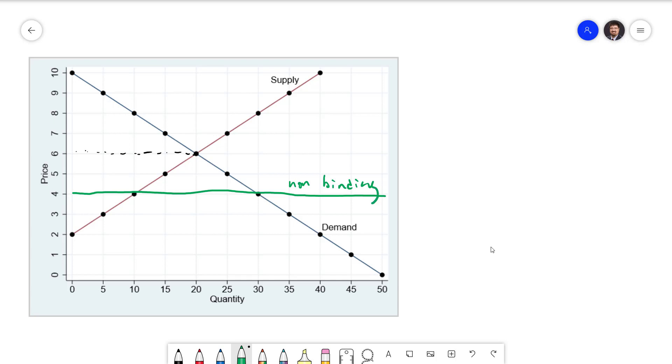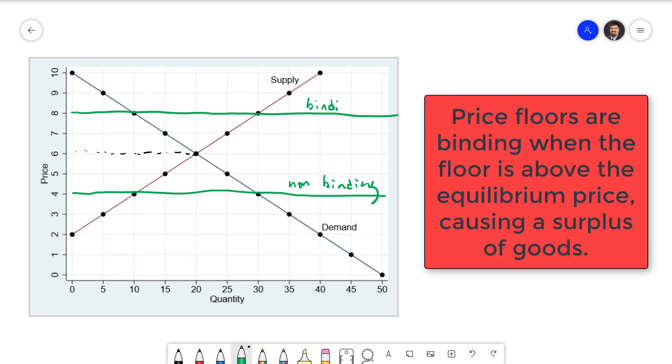Again, it's totally possible for supply and demand to shift in a way that this becomes binding. But for now it's not. Now let's look at a price floor at 8. Since 8 is above the equilibrium price of 6, this is going to be a binding price floor.